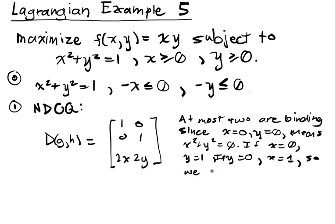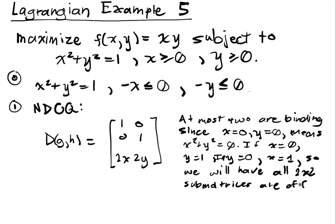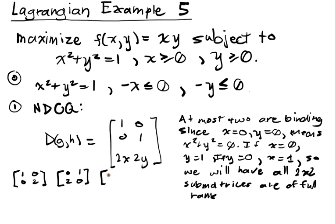So all 2×2 submatrices are of full rank. If x is binding, I'll have [1, 0; 0, 2]. If y is binding, I'll have [0, 1; 2, 0]. And if x and y are both binding, well, we can't have x and y both binding and satisfy the constraint, so we just ignore it.